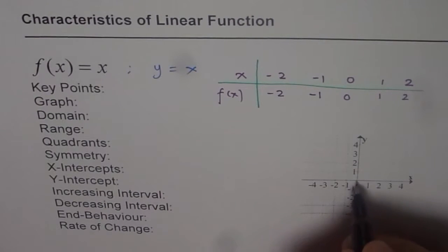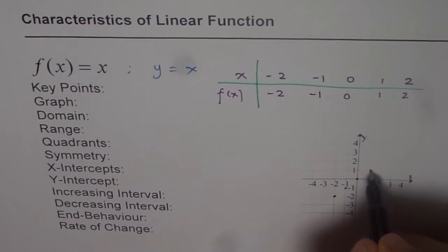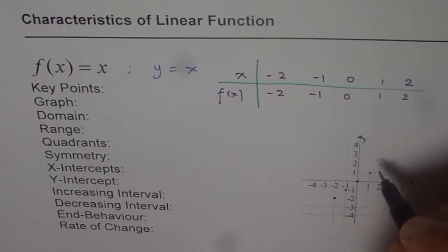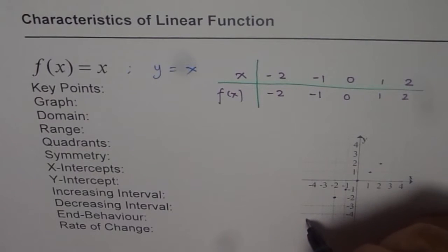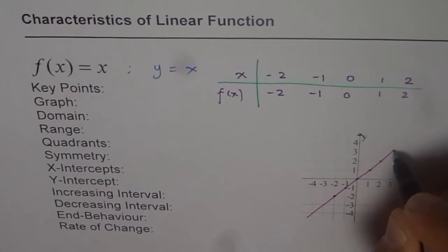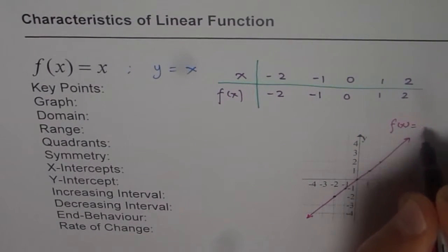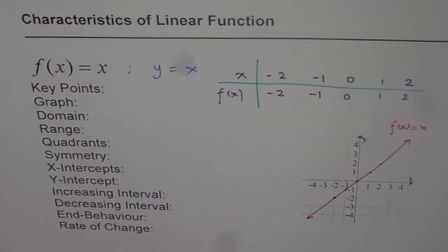Minus 2, minus 2: x value minus 2, y value minus 2 gives us a point right there. Then minus 1, minus 1; 0, 0; 1, 1; 2, 2 — and so on, we can have all the points. A line is a set of infinite points, but they should all lie on the same straight line. We also call them collinear — collinear means points in the same line. This line represents our function, which is f of x equals to x, and every point on this line is a part of our function.